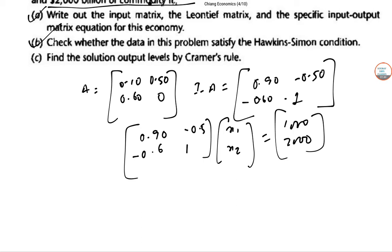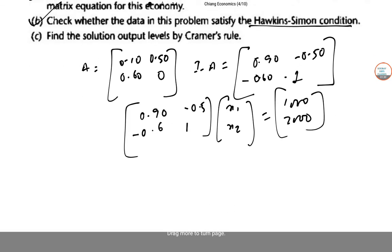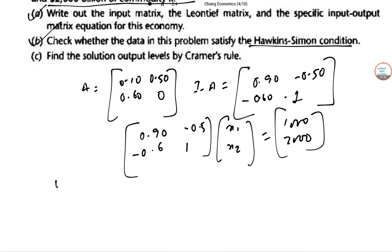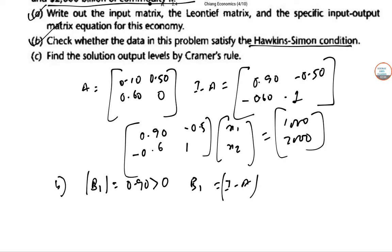Next, check whether the data in the problem satisfy the Hawkins-Simon condition. For the Hawkins-Simon condition, the principal minor B1-hat is 0.90, which is positive. The determinant of (I minus A) is also 0.60, which is also positive.